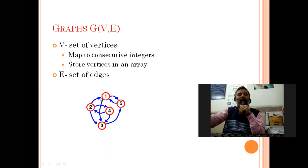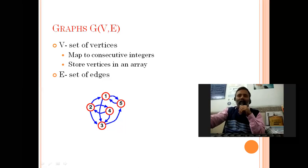We can store data on nodes, and all these vertices can be connected by edges. Vertices are also called nodes, just like in linked lists and trees. These edges may be directed or undirected, which we will discuss later.